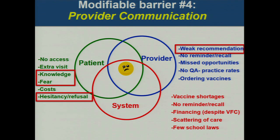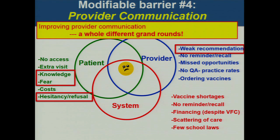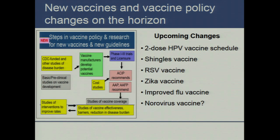The fourth important barrier is provider communication — that's a whole separate grand rounds I could give. It's so important and complicated. I do have videos showing how we tend to communicate poorly versus well about vaccines. I also know that when I moved from Rochester to LA I was coming to the hotbed of vaccine hesitancy — and it really exists. But leave LA and it's not this way, other than Seattle and Boulder, Colorado, and a couple other places. There's something about the HPV vaccine that makes provider communication especially important.